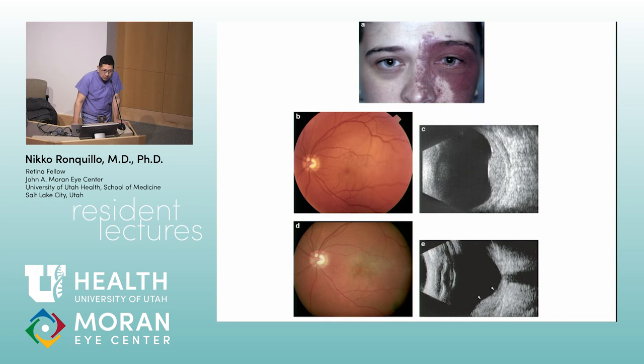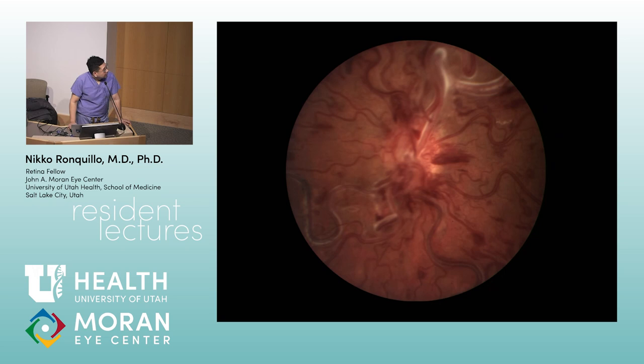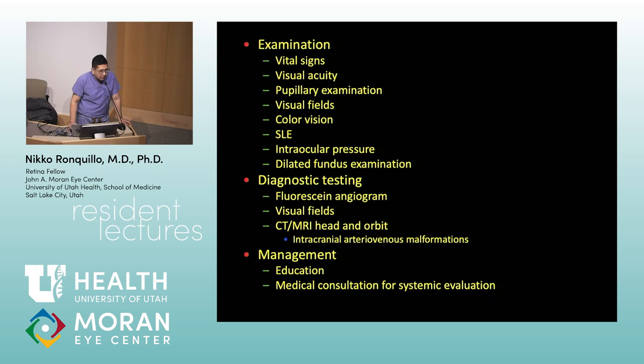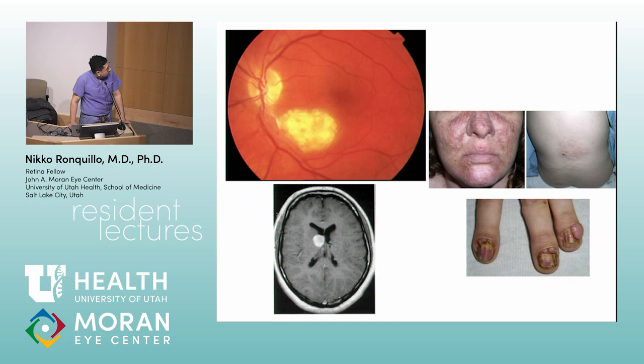Sturge-Weber syndrome: important association is glaucoma. Below age 10, the mechanism is angle dysgenesis; after age 10, elevated episcleral venous pressure. Next — racemose angiomatosis: no intervening capillaries, doesn't leak. Next — retinal astrocytoma from tuberous sclerosis: genes TSC1 and TSC2, chromosomes 9 and 16. Associated findings: ungual fibromas, calcifications on CT.